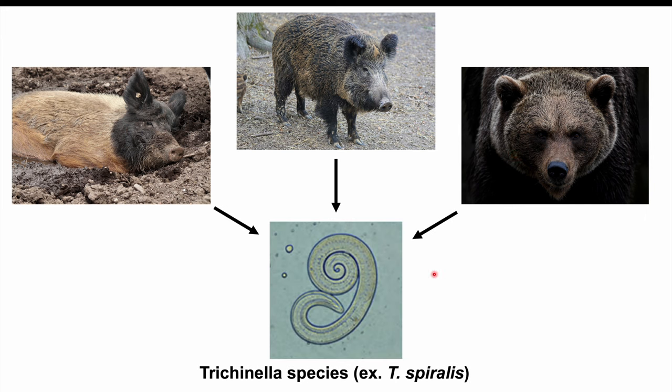If any of these species are consumed by humans, they can also harbor Trichinella species. One example is Trichinella spiralis, but there are other species of Trichinella that can cause infection and lead to trichinosis.